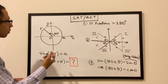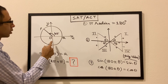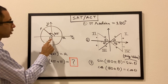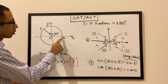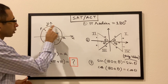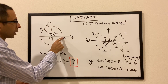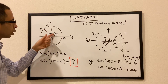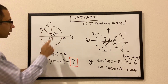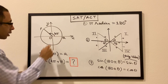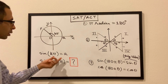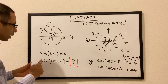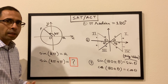In this question, there is a point P on the circle, O is the origin, Q is also a point on the circle and on the x-axis. Angle POQ is equal to kπ. This angle is equal to kπ, and sine of kπ is given to be equal to a. We have to find the value of sine of kπ plus π.